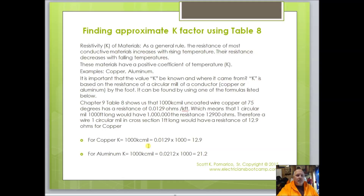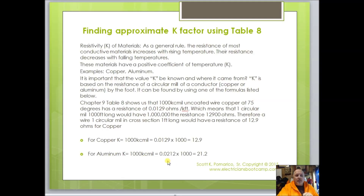Looking at Table 8: for 1000 kcmil, find the uncoated column. You'll see the number 0.0129 — multiply that by 1000 and you get 12.9. For the same 1000 kcmil in aluminum, the value is 0.0212 — multiply by 1000 to get 21.2. That's how they derive the K value.